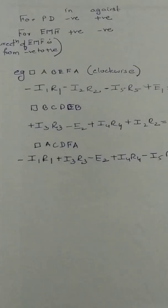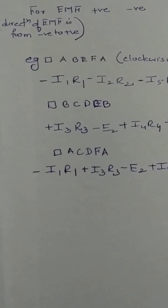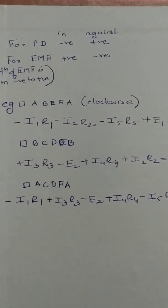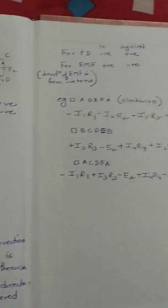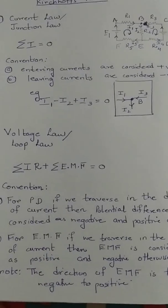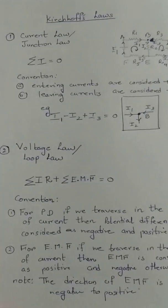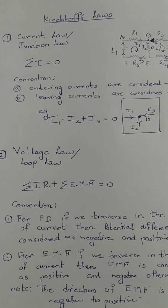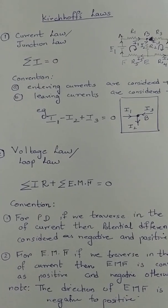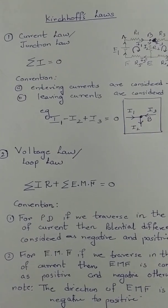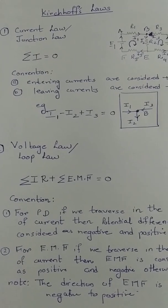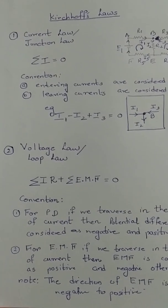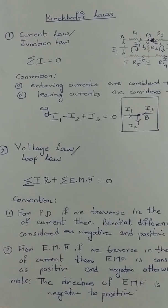Now we have framed three equations. If there is one variable you need one equation; if there are two variables you need two equations; if there are three variables you need three equations. In this way we can find the unknowns using Kirchhoff's voltage and current laws. Thank you.